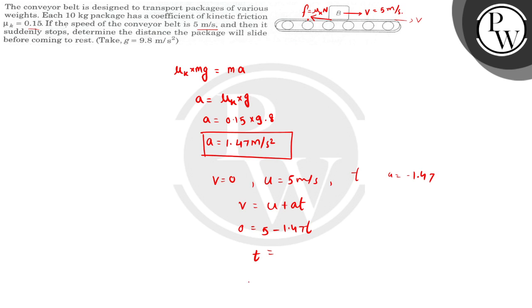Okay, they are asking for displacement. Why are we finding time? Time is not needed. So displacement can be found using the third equation of motion: v squared equals u squared plus 2as. Here final velocity is 0, initial velocity is 5 squared, minus 2 times 1.47 times s. So s equals 25 divided by 2 times 1.47.